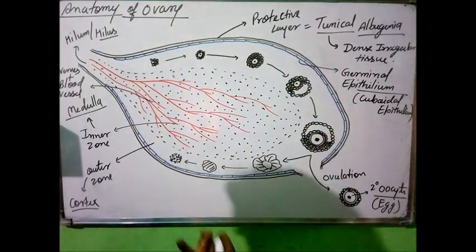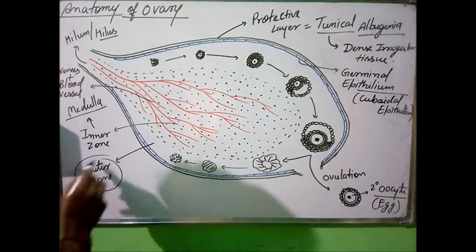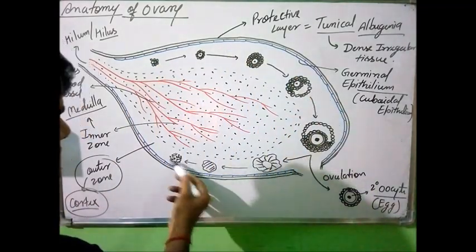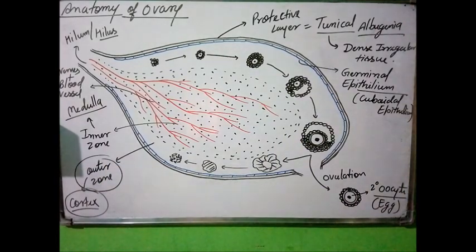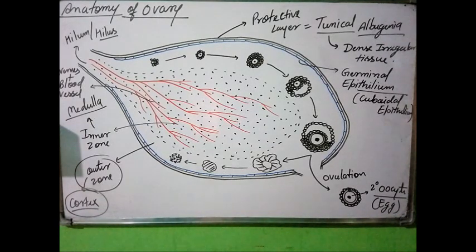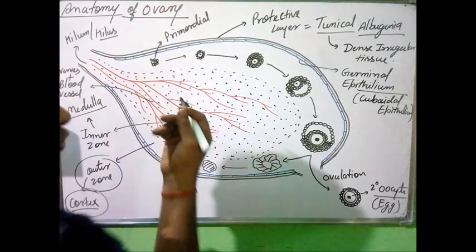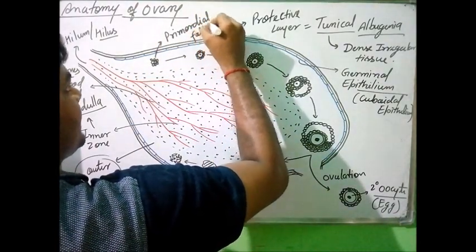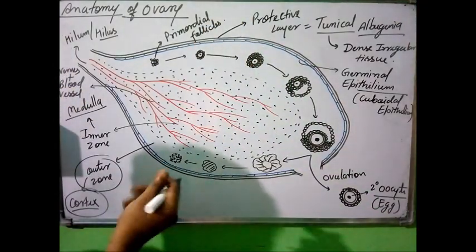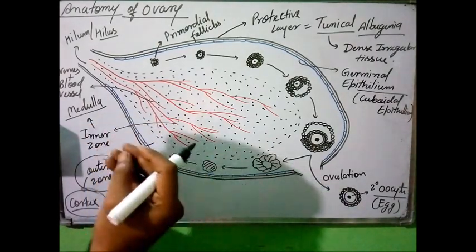The developmental activity inside the ovary happens in the cortex, the outer zone. All the ovarian follicles develop in the cortex, which shows successive stages of follicle development. Many ovarian follicles develop together, but we represent the development of one follicle. The first stage is the primordial follicle — very minute follicles formed by aggregation of a few germinal epithelium cells.